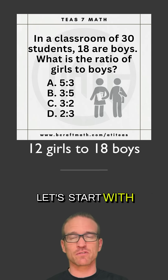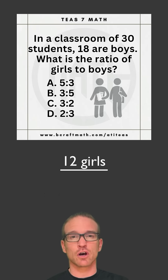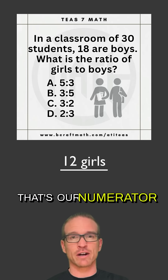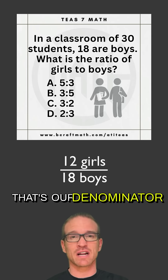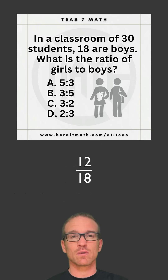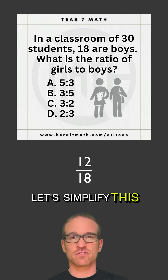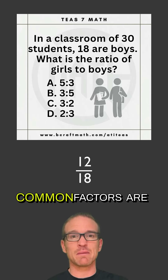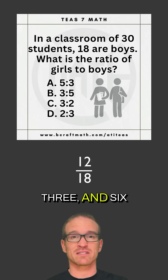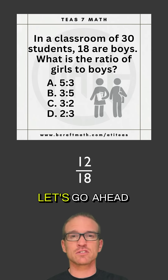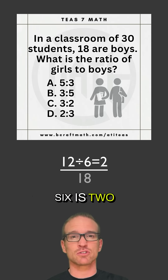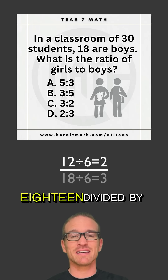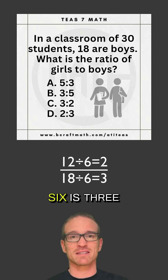Let's start with the fraction. 12 girls is our numerator, 18 boys is our denominator — 12 over 18. Let's simplify this fraction. Common factors are 2, 3, and 6. Let's divide by 6 to simplify in one step. 12 divided by 6 is 2, and 18 divided by 6 is 3.